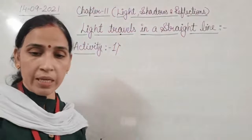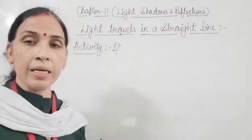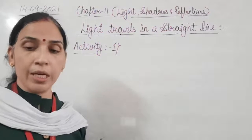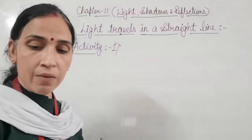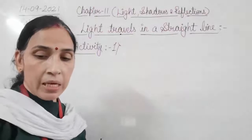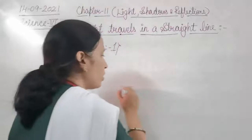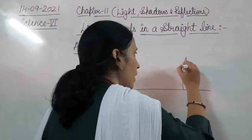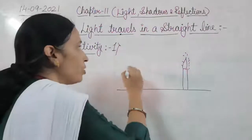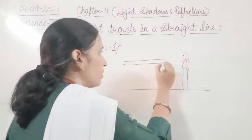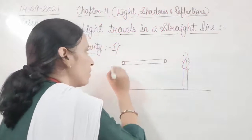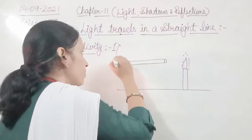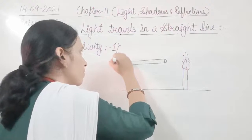What we are supposed to do is: fix a lighted candle on a table, take a rubber tube and stretch it straight, and look through it at the flame of the candle with one eye, keeping the other eye closed. So you are going to take a table, place a glowing candle on it, then take a rubber tube and see through that tube.